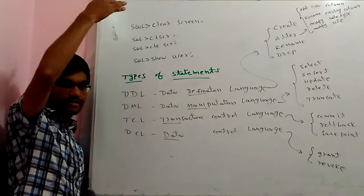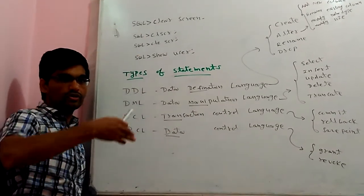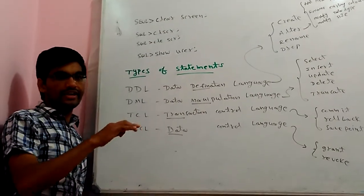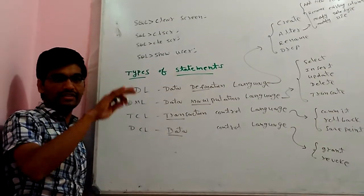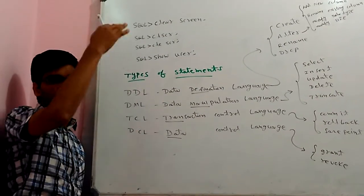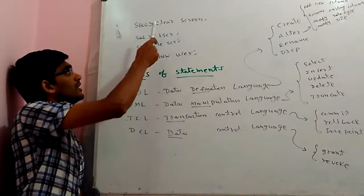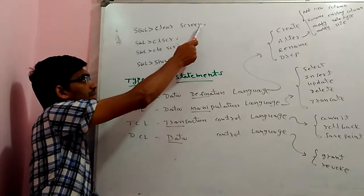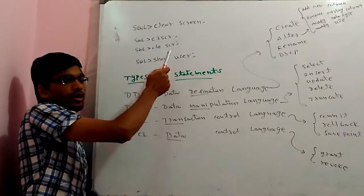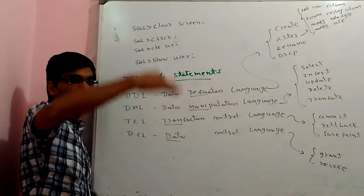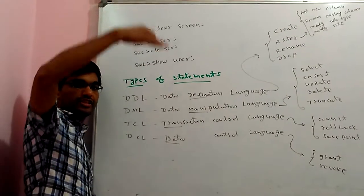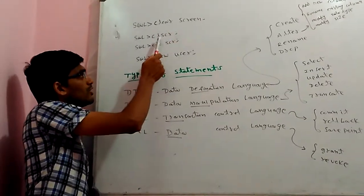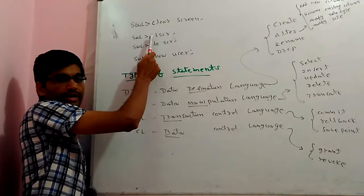Whatever commands you have typed on the screen, all the values will be displayed. If you want a fresh screen, you can type the command 'clear screen' followed by a semicolon, and you will see a cleared, fresh screen. You can also use one more command.